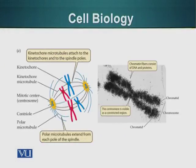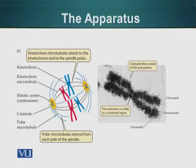Before we talk about mitosis, let's look at the apparatus that is responsible for making this process feasible. The two major components are the spindle and the chromosomes. The spindle is made up of a centrosome out of which microtubules are emanating. The centrosome is the organelle which is responsible for formation of microtubules.